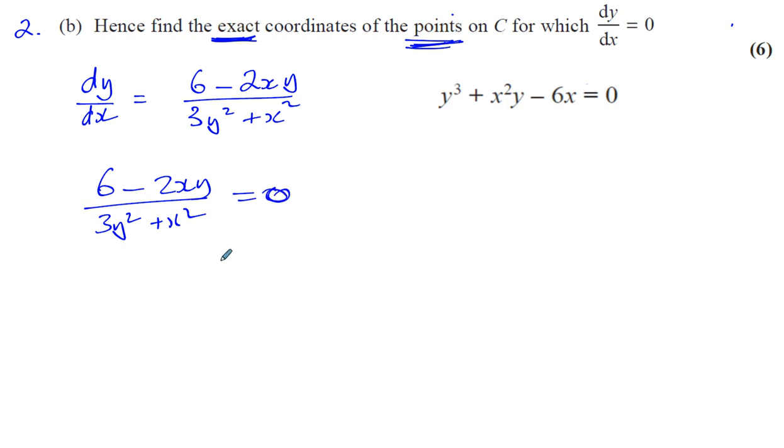Let's say (6 minus 2xy) over (3y squared plus x squared) equals 0. To solve an algebraic fraction equation, let's get rid of the denominator by multiplying both sides by the denominator.